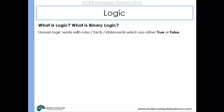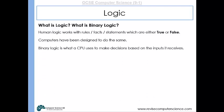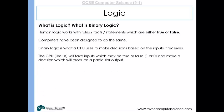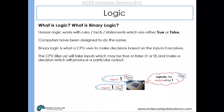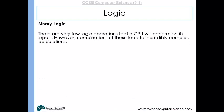Human logic works with these rules — these facts, statements that are either true or false — and computers have been designed to do exactly the same thing. Binary logic is what a CPU will do to make decisions based on the inputs it receives. Like us, a CPU will take inputs which might be true or false — a one or a zero — and produce a particular output. There are very few logic operations a CPU performs, but the combination of these different logical operations can lead to really complex calculations.